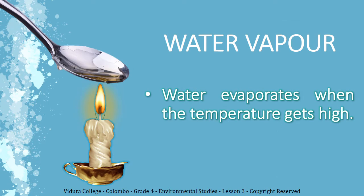Now we are going to see how water is evaporated. We are going to do an experiment. You can do this experiment with your parents at home. To do this experiment you need a candle, a spoon, and some water. All you have to do is take water into the spoon and heat it. After a few minutes, the water on the spoon boils and the water level decreases. Eventually, water evaporates within a few minutes.